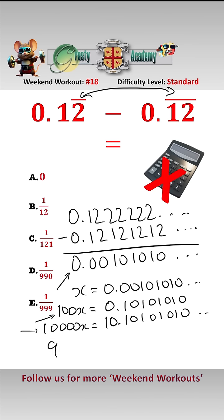...gives us 9,900x equals 10, i.e., x equals 1 over 990, which is answer D. Incidentally, we could have done it with fractions.